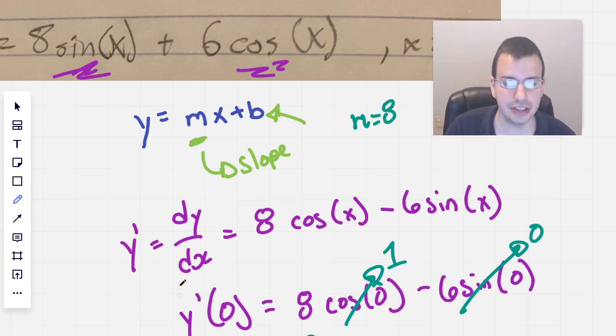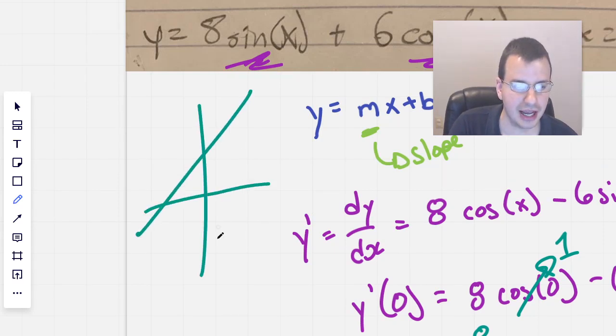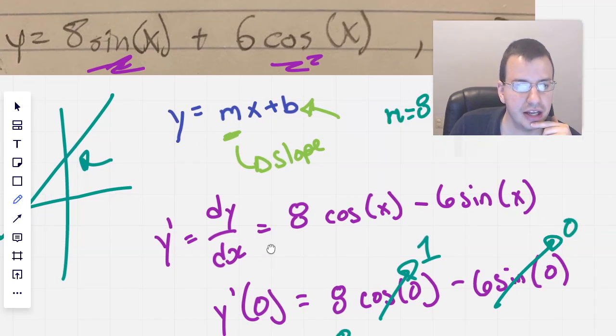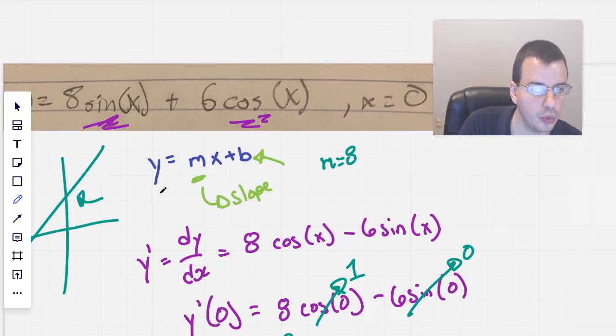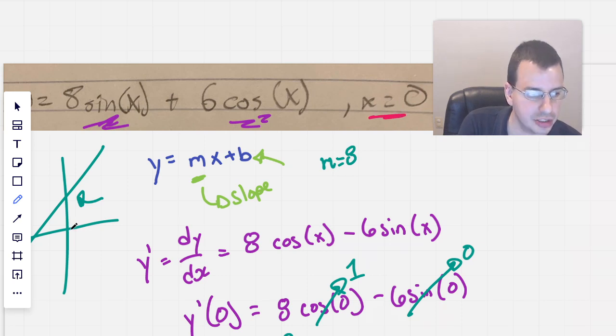So now we want to find the y-intercept. So I'm going to draw a picture real quick. So we have a slope of eight. And so I'm going to make it kind of like that. And we want to find that point right there. So, what we're going to do then is we know our point x here. So we know the point x is going to be zero.